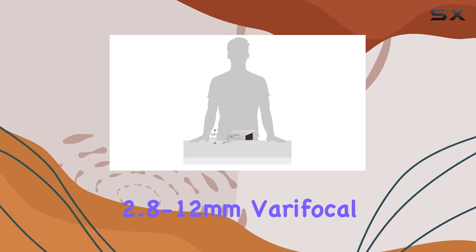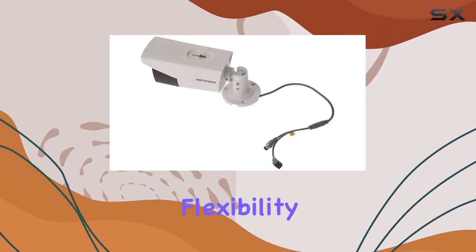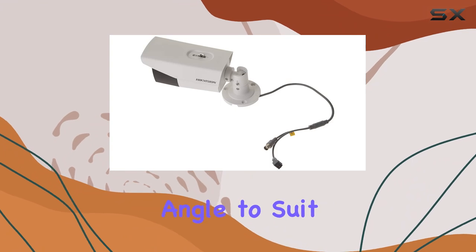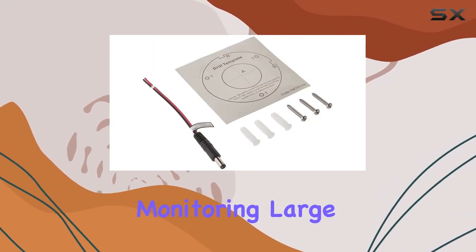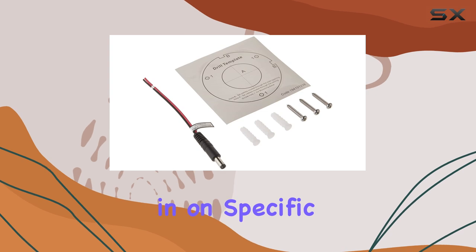The 2.8-12mm varifocal lens offers flexibility in adjusting the viewing angle to suit various surveillance needs, whether monitoring large areas or zooming in on specific details.